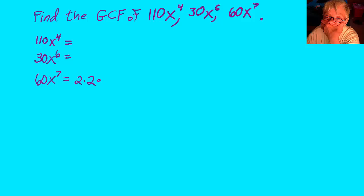Okay, 60 x to the seventh is going to equal 2 times 2 times 3 times 5, the numbers. 60 equals 2 times 2 times 3 times 5, 30 equals 2 times 3 times 5, and 110 equals 2 times 5 times 11.